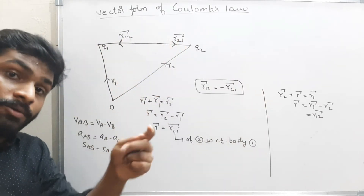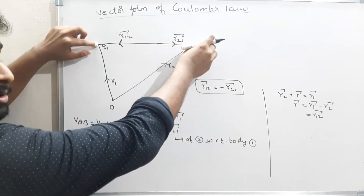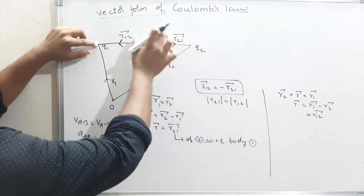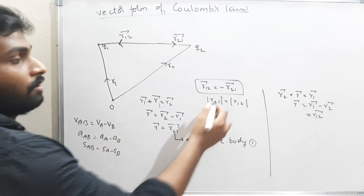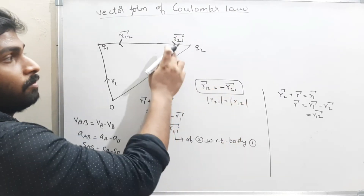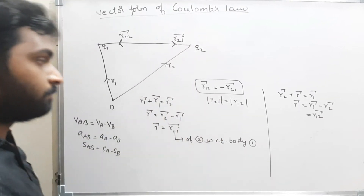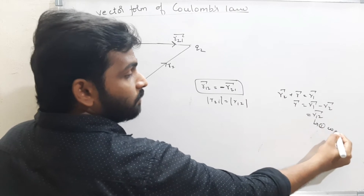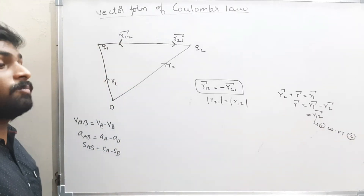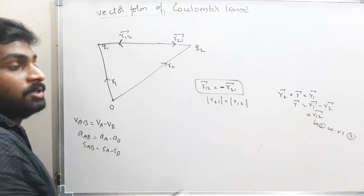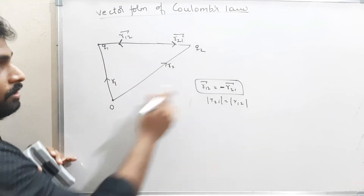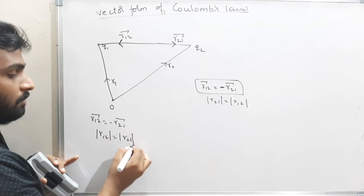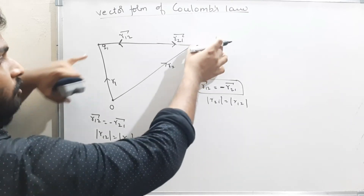The magnitudes of r̄₂₁ and r̄₁₂ are the same — both equal to R, the distance between the two charges. Their directions are opposite, which is why r̄₁₂ = −r̄₂₁. The magnitude is the same; only the direction differs.